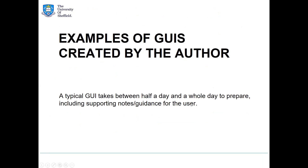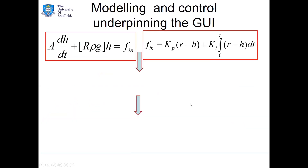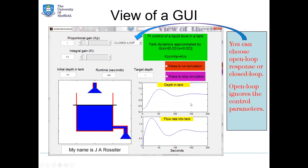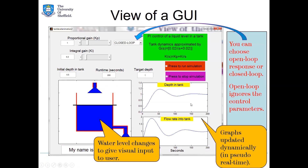I've got some simple examples here — most take about half a day to a whole day to prepare, including supporting notes and guidance. There's one on a tank level scenario: a simple picture where students get the idea, with some underlying mathematics in the supporting notes. The GUI is relatively simple with a few sliders students can change. The key thing is that things move — it's pseudo-authentic, so students can relate to it, see things moving, and change key parameters to see what happens. There's also a mixing tank GUI where colours change as you adjust flow rates, concentrations, and tank volumes, and a house temperature example.